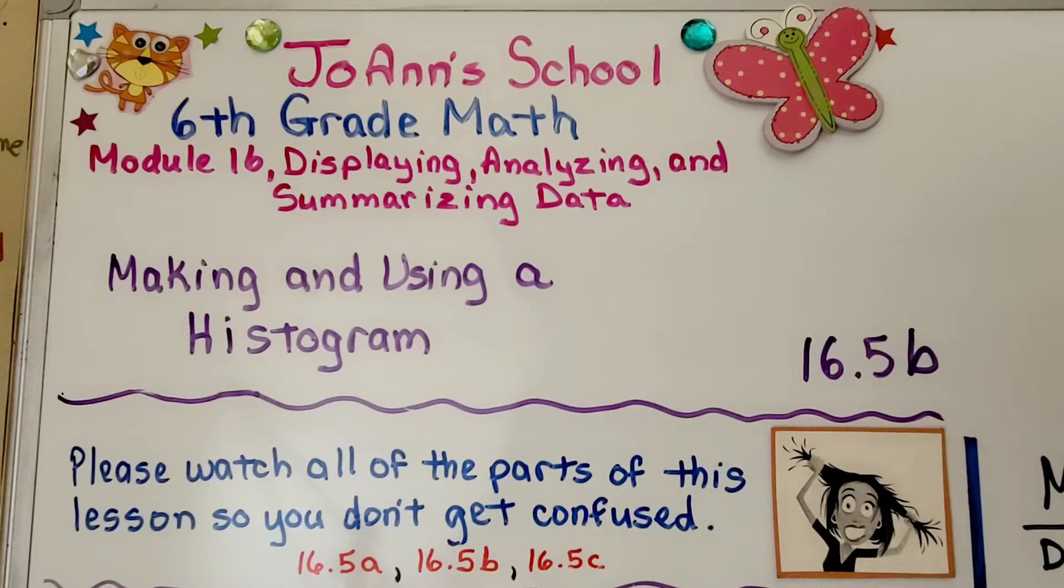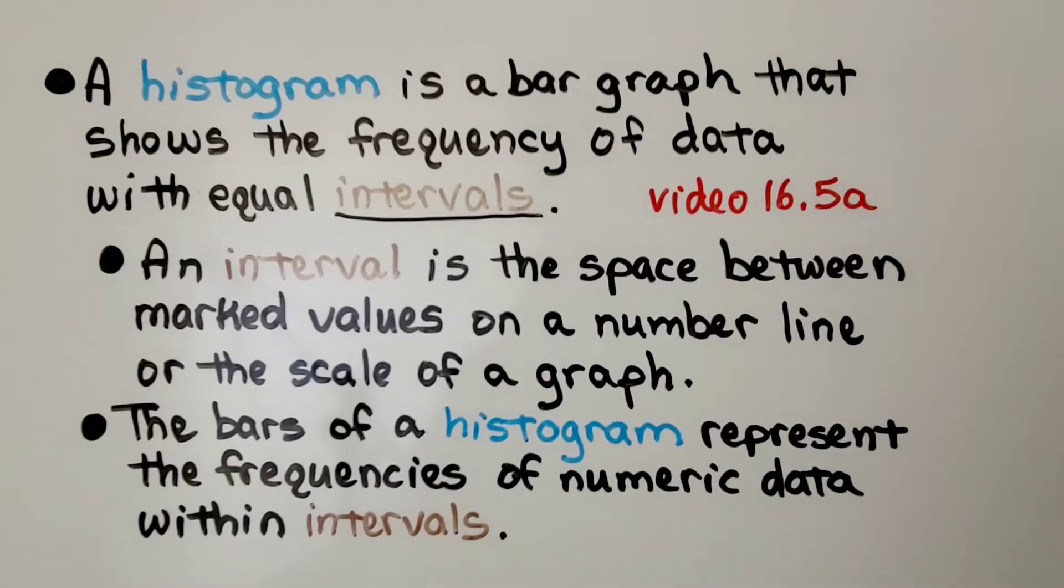Lesson 16.5b Making and Using a Histogram. A histogram is a bar graph that shows the frequency of data with equal intervals. We learned about intervals in 16.5a, which is linked in the description. An interval is the space between marked values on a number line or the scale of a graph. And the bars of a histogram represent the frequencies of numeric data within intervals.